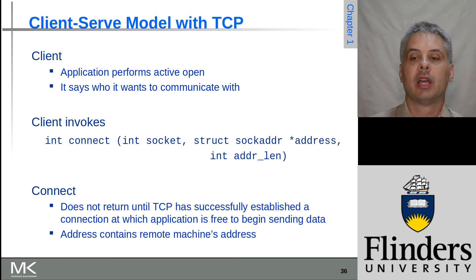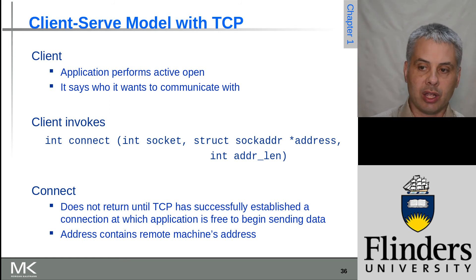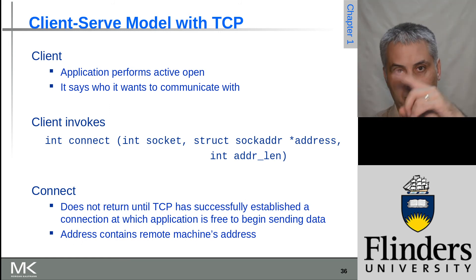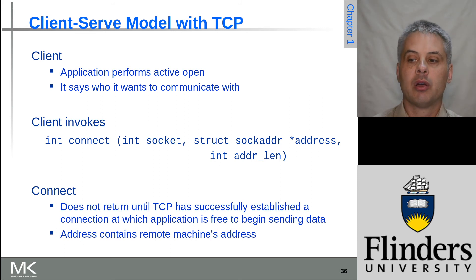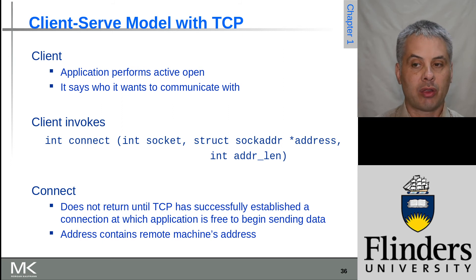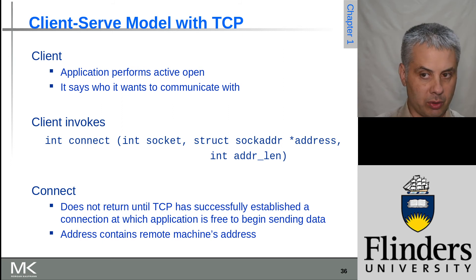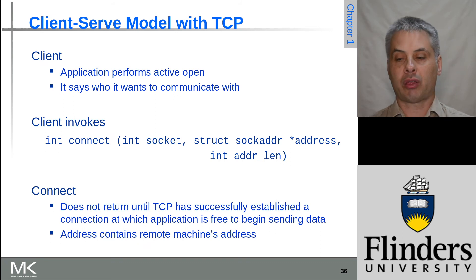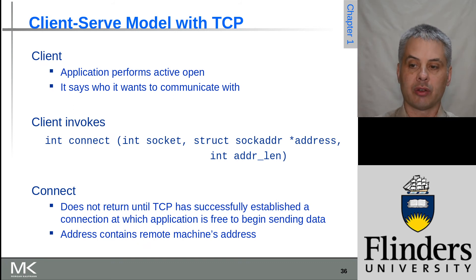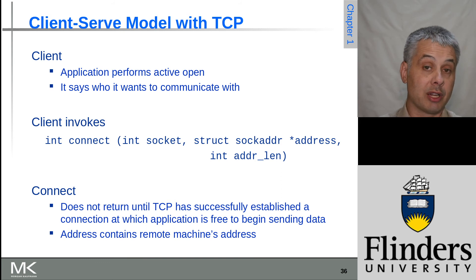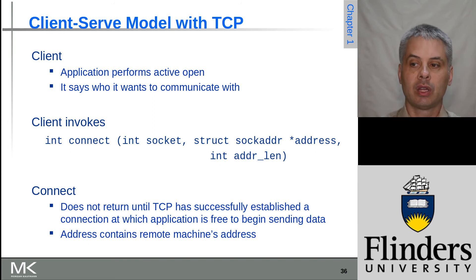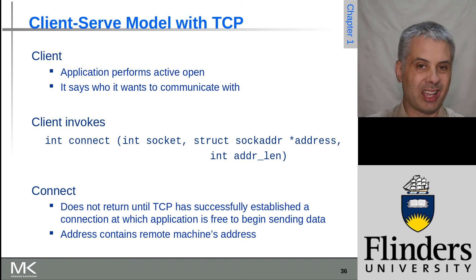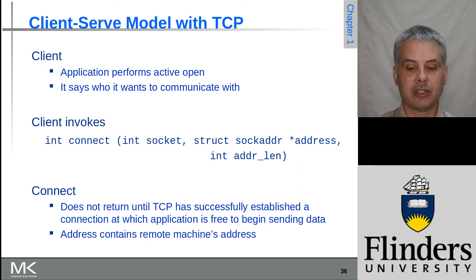If you're doing a TCP connection, connect will actually perform the three-way handshake before returning, so when it returns the socket is ready to send and receive data — and there may already be data ready to receive depending on the server's behavior. It doesn't return a new socket because the socket you passed in is now the connected socket. If it's UDP, there's no delay because UDP is a connectionless protocol and doesn't need to connect.